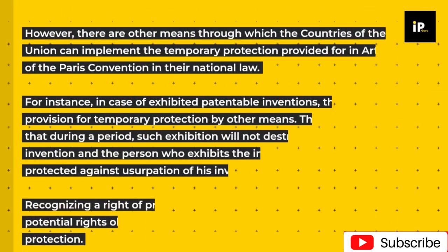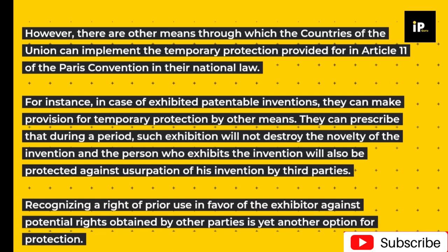However, there are other means through which the countries of the Union can implement the temporary protection provided for in Article 11 of the Paris Convention in their national law. For instance, in case of exhibited patentable inventions, they can make provision for temporary protection by other means. They can prescribe that during a period, such exhibition will not destroy the novelty of the invention, and the person who exhibits the invention will also be protected against usurpation of his invention by third parties.